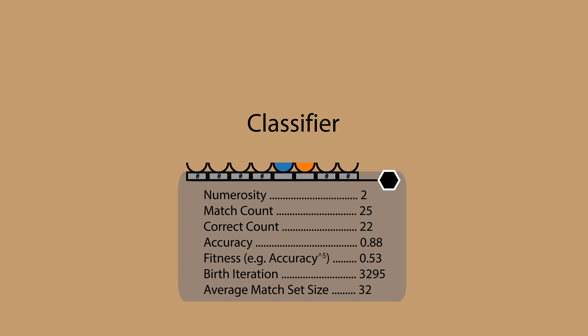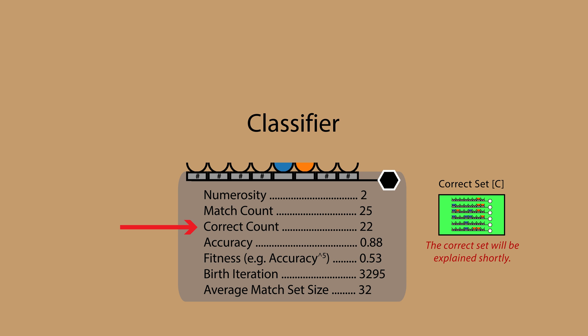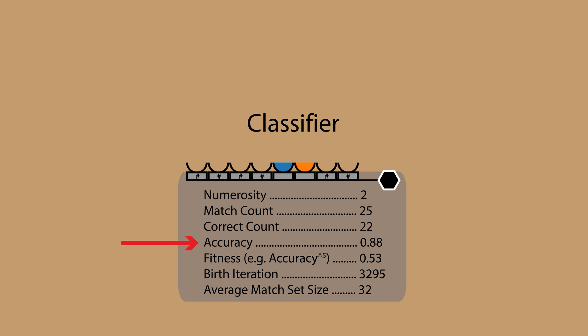Let's talk about a few common classifier parameters. Numerosity is the number of classifier copies that symbolically exist in the population. The match count is the number of times the rule has been in a match set. The correct count is the number of times it's been in a correct set. The accuracy of the rule is calculated by dividing the correct count by the match count.